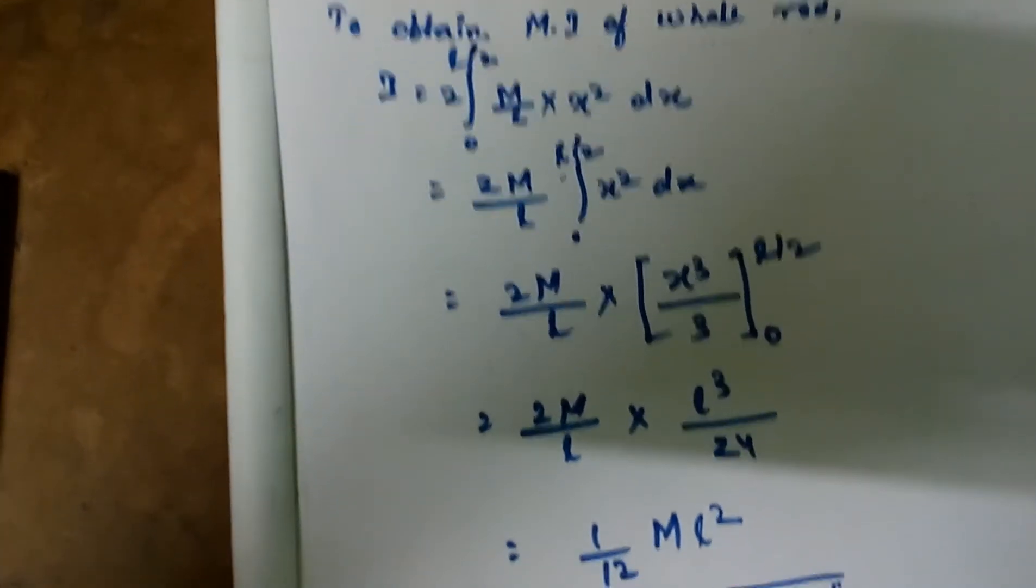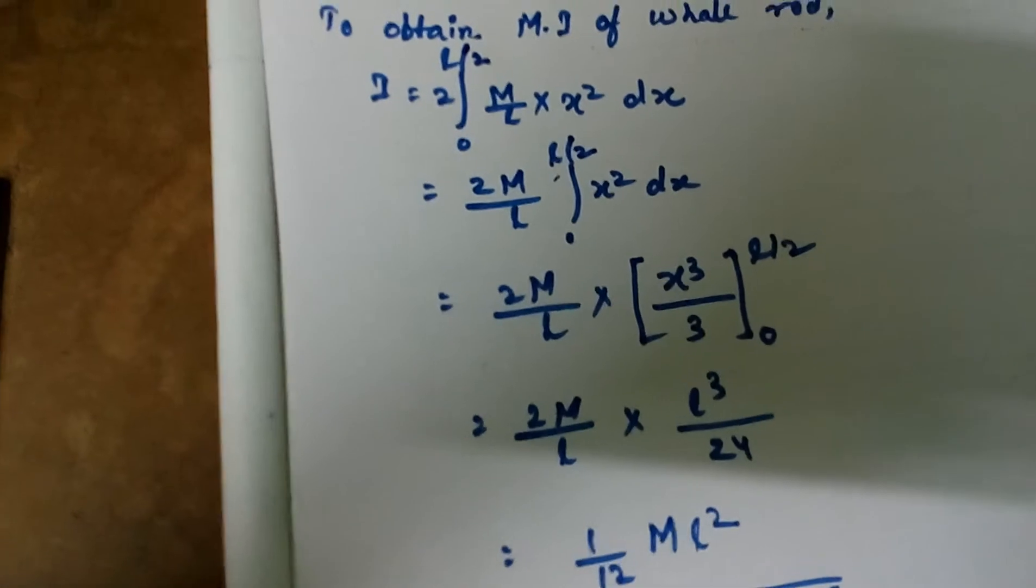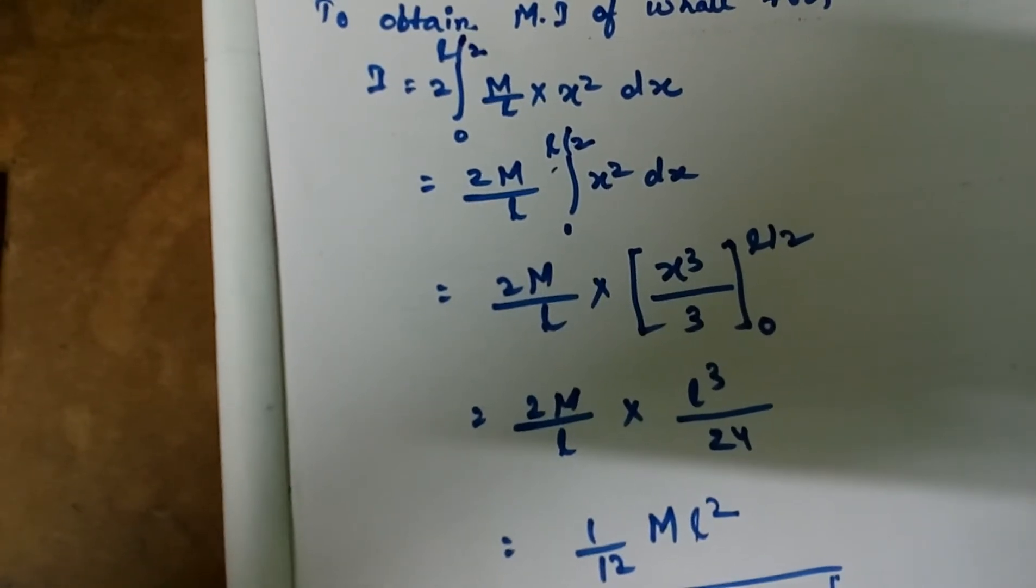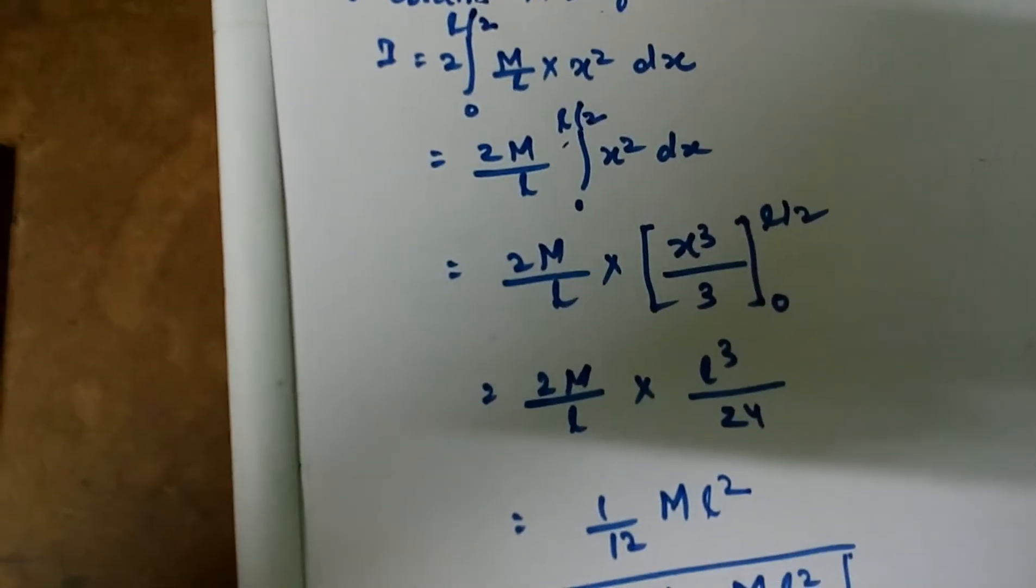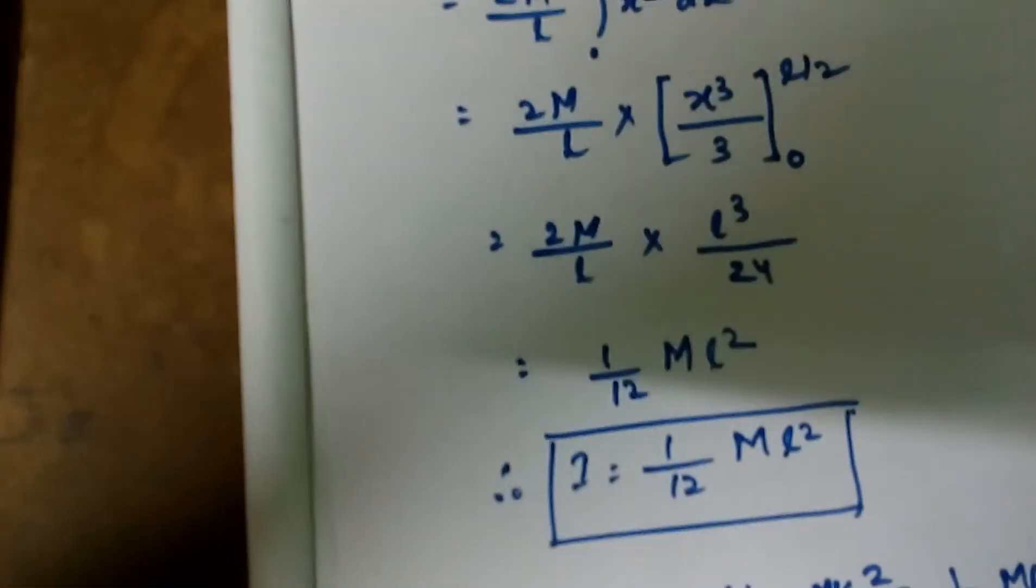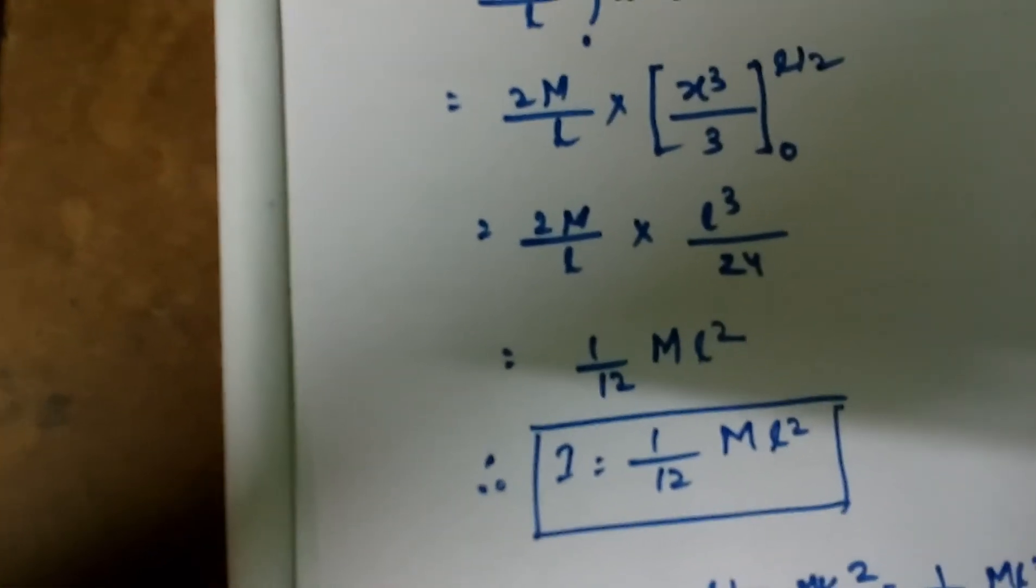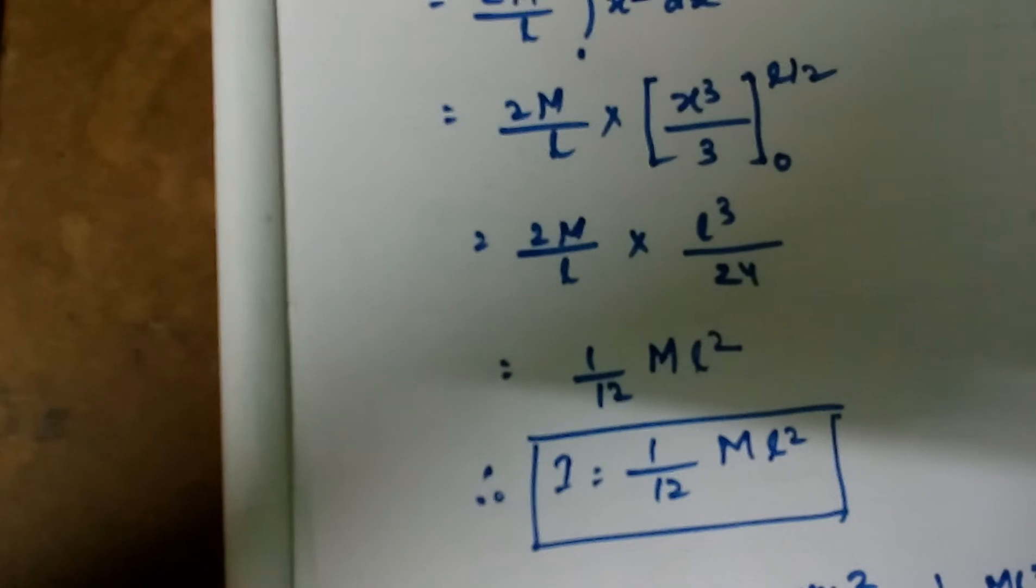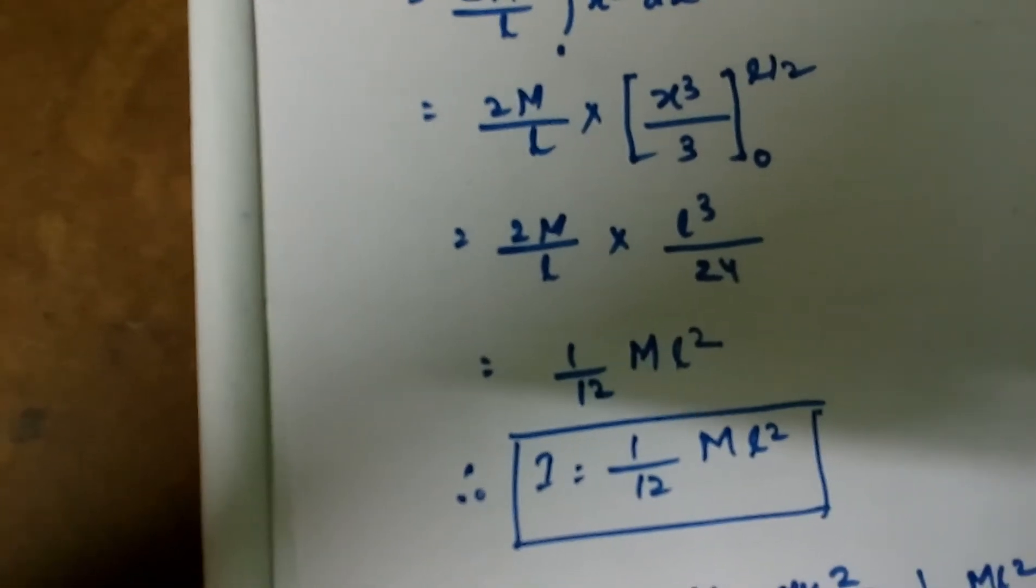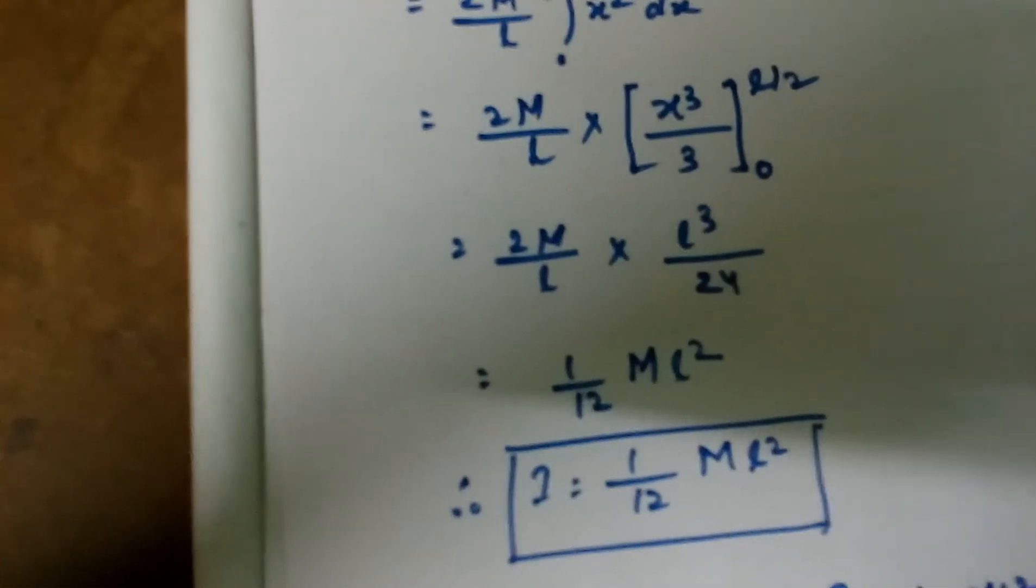24 will be cancelled by 2. We get 1 by 12. L will be cancelled by an L of L cubed. So, we get 1 by 12 ML squared. So, the moment of inertia of a thin rod rotating about an axis perpendicular to its length equals I equals 1 by 12 ML squared.